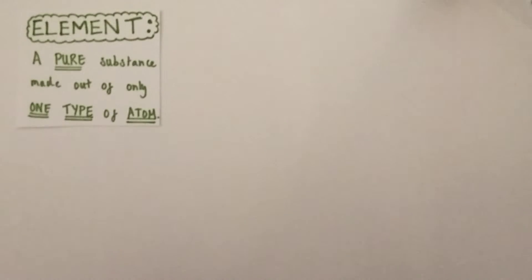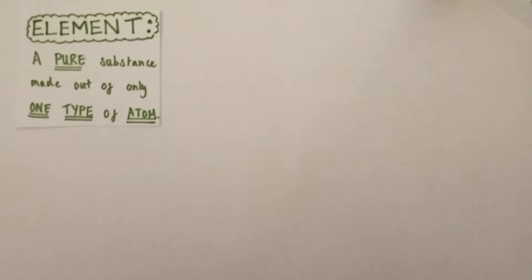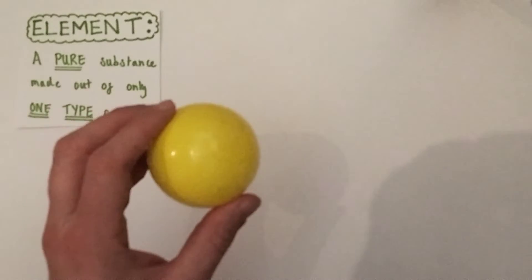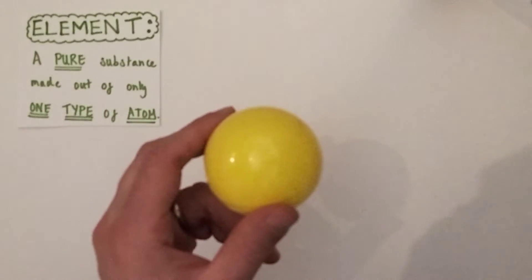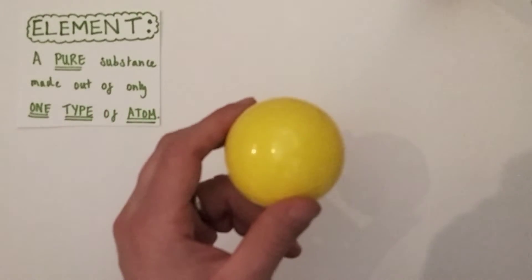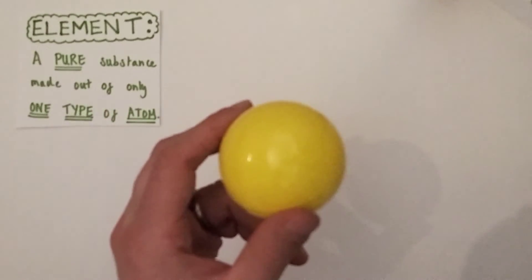Hi there, welcome to this Alchemist Chemistry video where I'm going to try and produce models to represent elements, compounds and mixtures. I'm going to use objects you might find lying around the home, namely these plastic ball pit balls, to produce my elements, compounds and mixtures models. Let's get started.